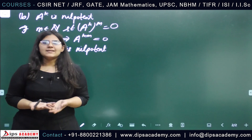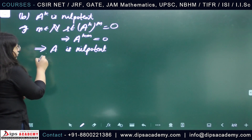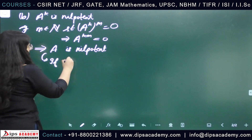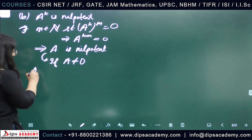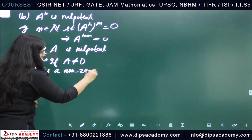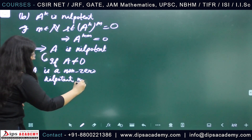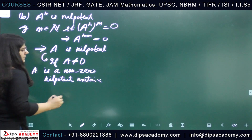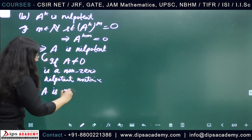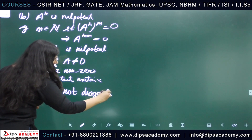Now we have two cases: whether A is the zero matrix or a non-zero matrix. If A is the zero matrix, then A is diagonalizable because the zero matrix is diagonalizable. But if A is not the zero matrix, then A is a non-zero nilpotent matrix, and we know that a non-zero nilpotent matrix is never diagonalizable. So option B is incorrect.